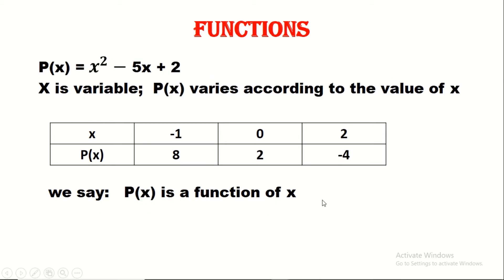Another example: if we have a polynomial p(x) equals x squared minus 5x plus 2, also however x varies, p(x) will vary. So here we can say that p(x) is also a function in terms of x.